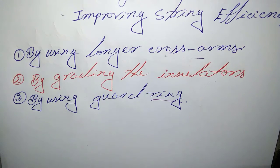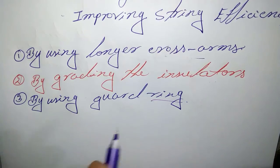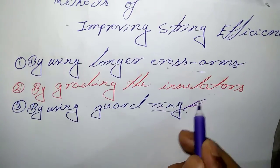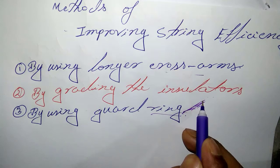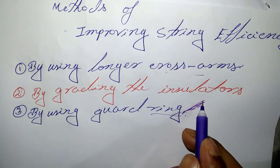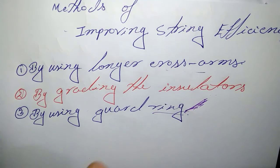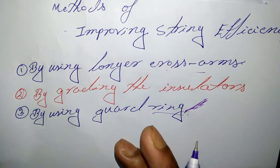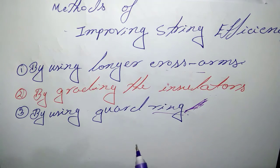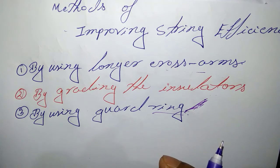The potential across units in a string can be equalized by using a guard ring, which is a metal ring electrically connected to the conductor and surrounding the bottom insulator, thereby improving string efficiency. Thank you everyone, see you in the next tutorial.